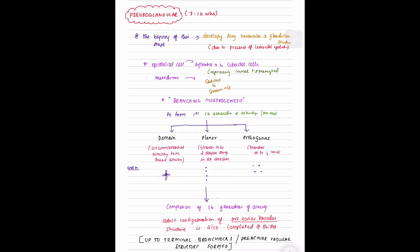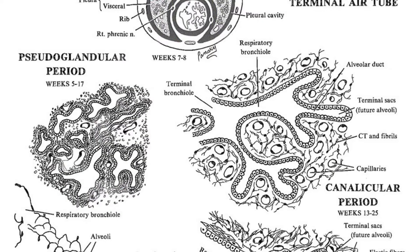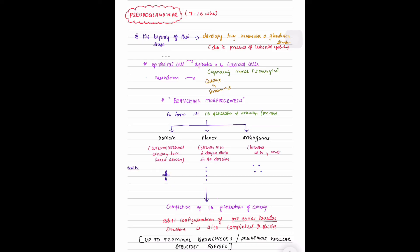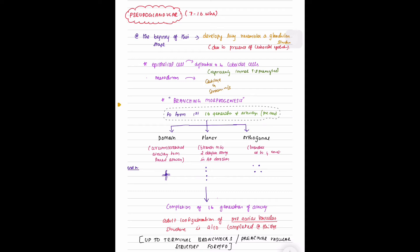The embryonic stage is followed by the pseudo-glandular stage, which lasts from seven to sixteen weeks. At the beginning of this stage the developing lung resembles a glandular structure because of the presence of cuboidal epithelium. The epithelial cells differentiate into cuboidal cells, which represent immature type 2 pneumocytes. The mesoderm will develop into cartilage and smooth muscles.